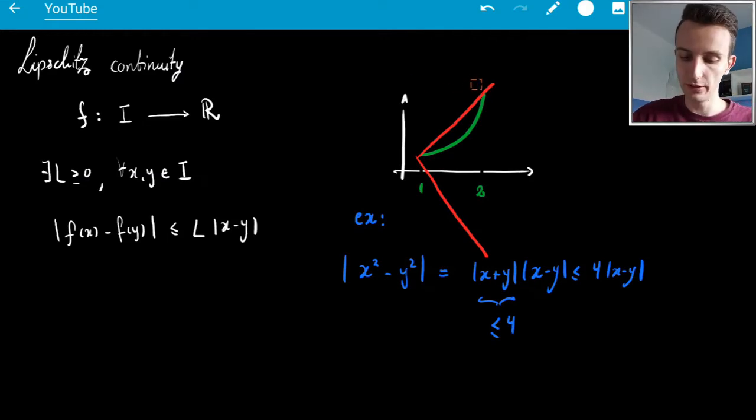So yeah, so the whole function on its domain is within this cone, and if this sort of constant exists for the whole interval, then we'd say that it's global. Now if this function extended to infinity, I would say that it's locally Lipschitz continuous, pretty much around any domain, I could say that it's locally Lipschitz continuous.